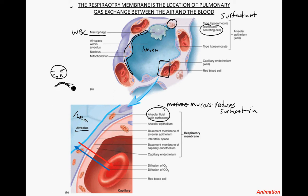Without surfactant reducing surface tension, all that liquid would attract to itself and the alveoli would be flattened, preventing any oxygen or carbon dioxide from entering. So here is the mucus layer, the simple squamous epithelial cell, the basement membrane, then a capillary with its own basement membrane, the capillary endothelial layer, the capillary lumen containing plasma, and then the red blood cells — inside which is hemoglobin.